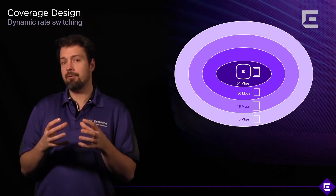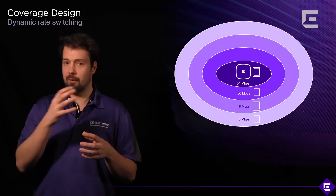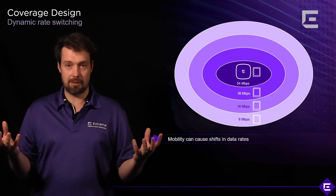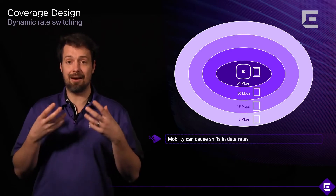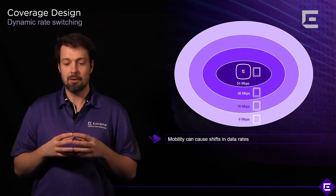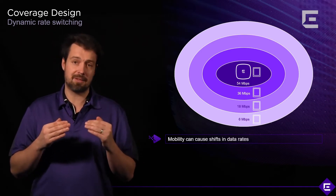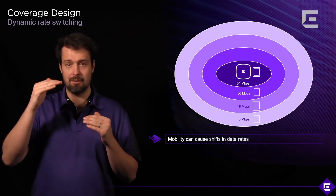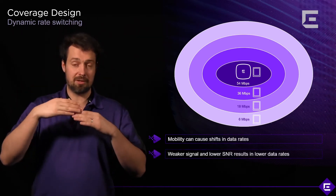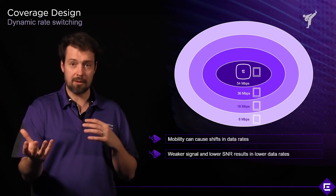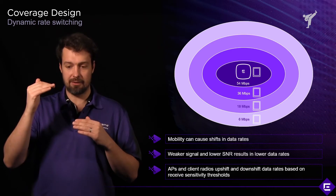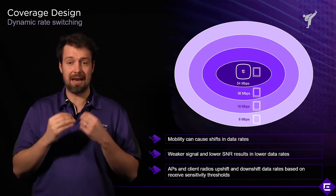The RF environment is always changing and very dynamic. So when we move around, it changes a lot. And with that, the RSSI and SNR are changing a lot. So what your device does, depending on whether it's still able to decode the message from the other side, it will dynamically switch the data rates. This is called dynamic rate switching.